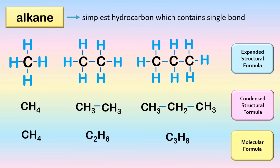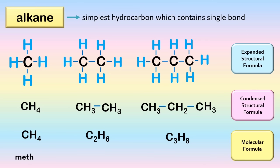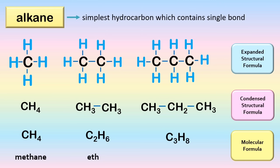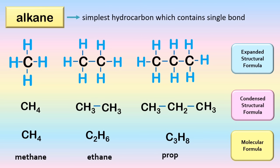Using IUPAC, let us name these hydrocarbons. For a molecule with one carbon we use the prefix 'meth' then add the family suffix '-ane', giving methane. For two carbons we use 'eth' plus '-ane', giving ethane. For three carbons we use 'prop' plus '-ane', giving propane. Here is the list of names of alkanes.